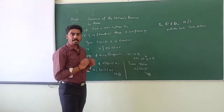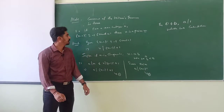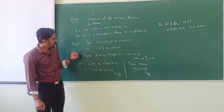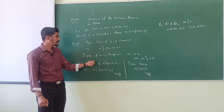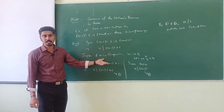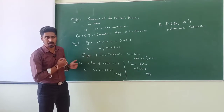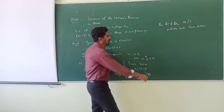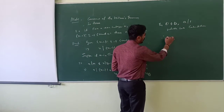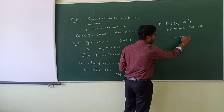We arrived at a contradiction because of our wrong assumption that n is a composite number. Therefore, n should be a prime number.